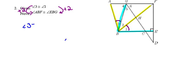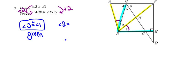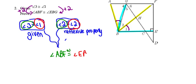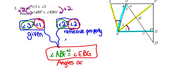I start with angle 3 being congruent to angle 1 — given. Angle 2 is congruent to itself by the reflexive property. It's critical to use the diagram for the next step. Combining angle 3 with angle 2 gives the yellow angle, angle ABF. Combining angle 1 with angle 2 on the right side gives the blue angle, angle EBG. The pieces were angles, the operation was addition — it's the angle addition theorem.